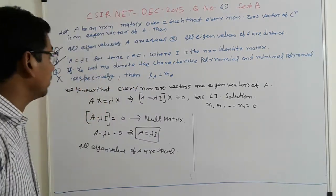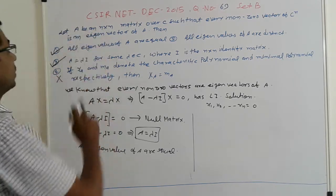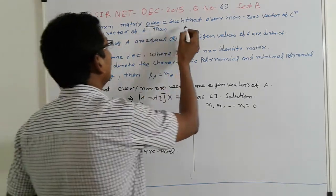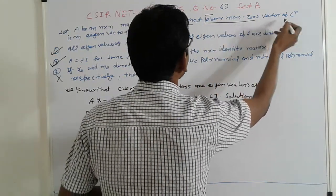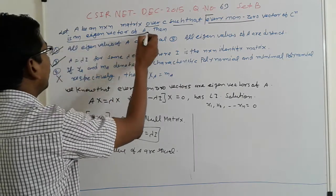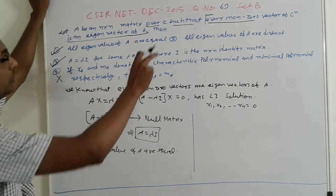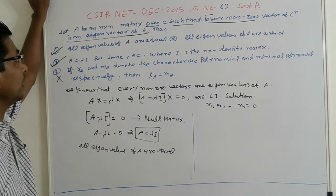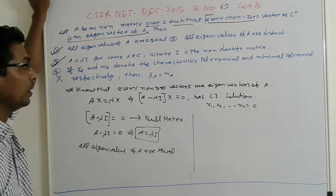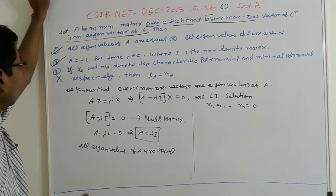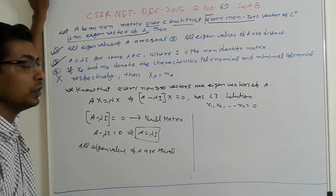Now come to the point, friends. A is an n×n matrix over C, such that every non-zero vector of C^n is an eigenvector of A. Given that every non-zero vector is an eigenvector of A, we know that AX = λX.